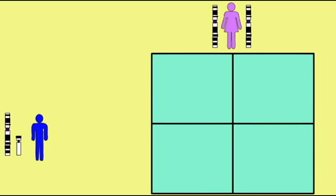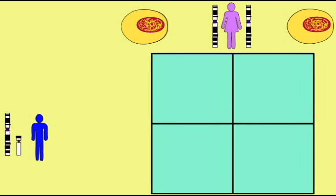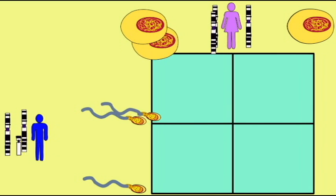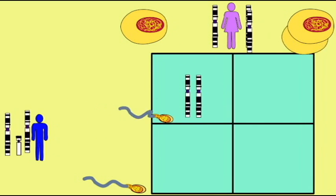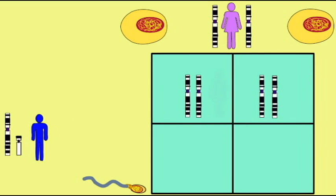Males, however, are heterogametic because males have a long X and a shorter Y chromosome. Half of male gametes receive the longer X chromosome, and half receive the smaller Y chromosome. Thus, it is the male chromosome in a sperm which will determine the gender of the offspring.